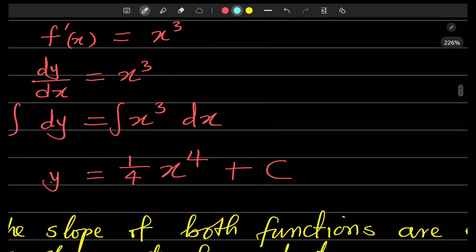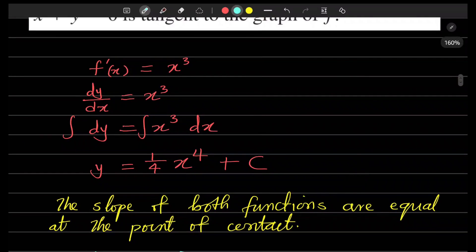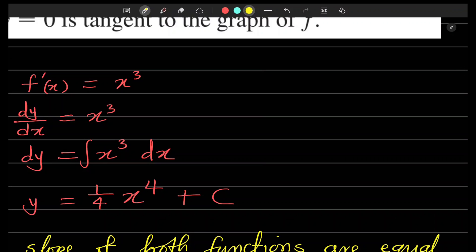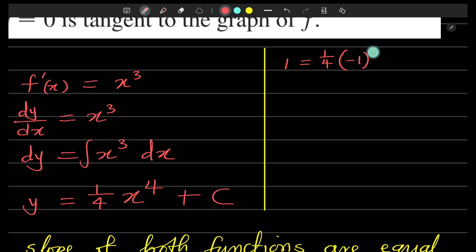That point is common to both functions, so we go back and plug in y equals one and x equals minus one to find C. We have: one equals one fourth times (minus one) to the fourth power plus C. Negative one to the fourth power is one, so this gives one equals one fourth plus C, which means C equals one minus one fourth, which equals three fourths.